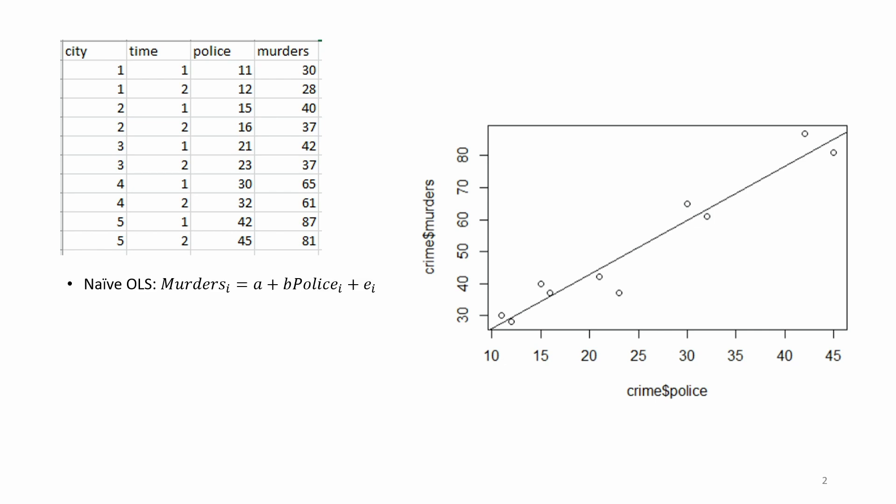Let's apply a simple OLS linear regression model where the output or dependent variable is the number of murders and the explanatory variable is number of police. The estimate of b is positive and significant, taking a value 1.6899. Higher numbers of police are associated with higher numbers of murders. This seems puzzling.